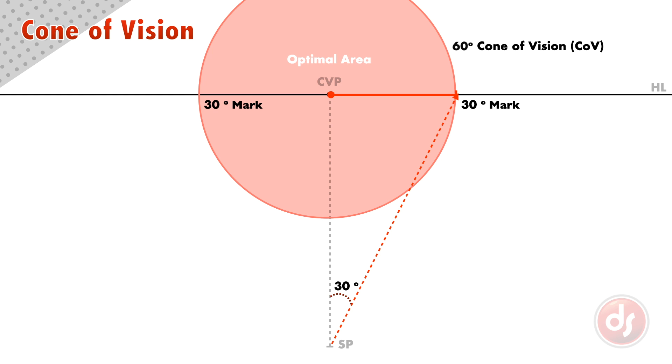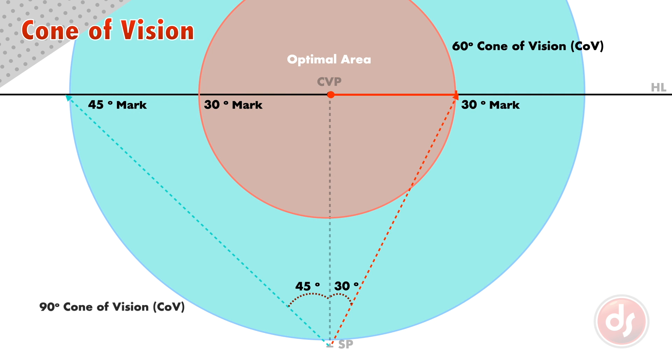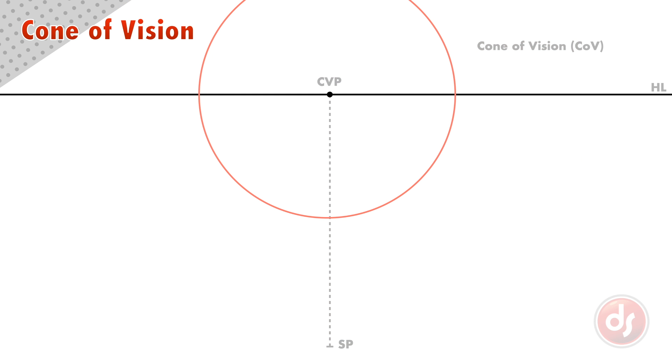The 60 degree cone of vision is our standard cone of vision, but some people will use a 45 degree angle from the station point to create a 90 degree cone of vision. This is acceptable but will contain slight distortion. To keep your perspective looking more true to human vision, stay inside the 60 degree cone of vision.